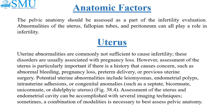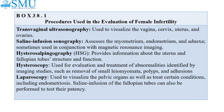Assessment of the uterus and endometrial cavity can be accomplished with several imaging techniques. Sometimes a combination of modalities is necessary to best assess pelvic anatomy. Procedures used in the evaluation of female infertility include transvaginal ultrasonography, used to visualize the vagina, cervix, uterus, and ovaries; and saline infusion sonography, which assesses the myometrium, endometrium, and adnexa, sometimes used in conjunction with magnetic resonance imaging.